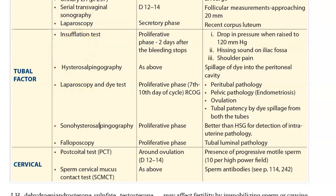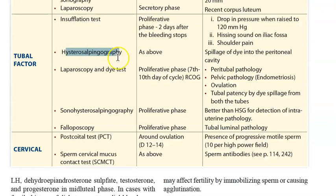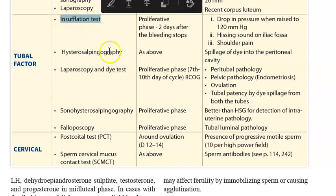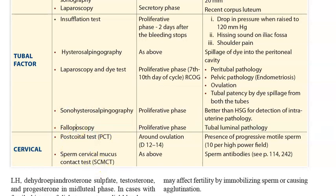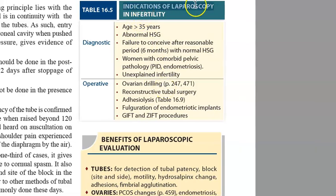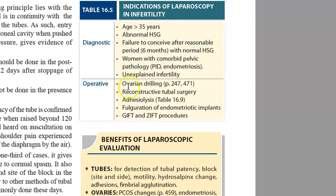Now let us move on to the tubal factors. For the fallopian tubes, a hysterosalpingogram is done - you can see the dye going through the thin tubes, confirming whether both tubes are patent bilaterally. Similarly, there is the laparoscopy dye test, insufflation test, and ultrasound hysterosalpingography. Laparoscopy is also operative - you can perform ovarian drilling.